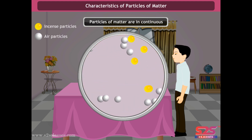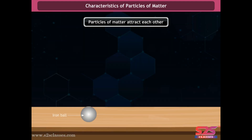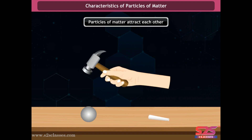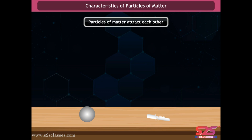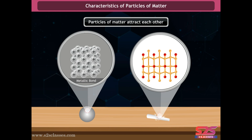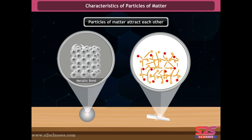Hence it can be concluded that particles of matter move continuously and their speed increases with an increase in temperature. Take an iron ball and a piece of chalk and try to break the iron ball by hammering it, then repeat with the chalk piece. The chalk piece breaks easily but the iron ball does not, because the forces of attraction between the chalk particles are lesser than between iron particles. Therefore, the particles of matter attract each other, but this force of attraction varies from matter to matter.